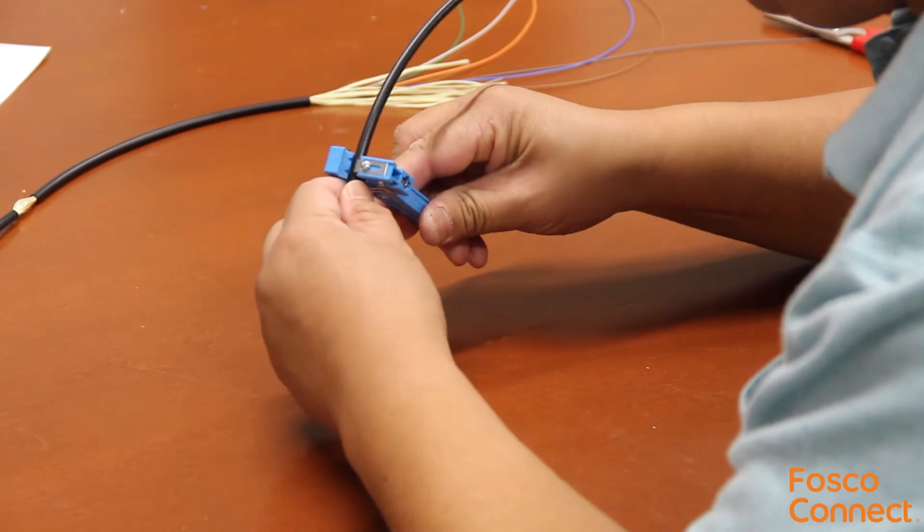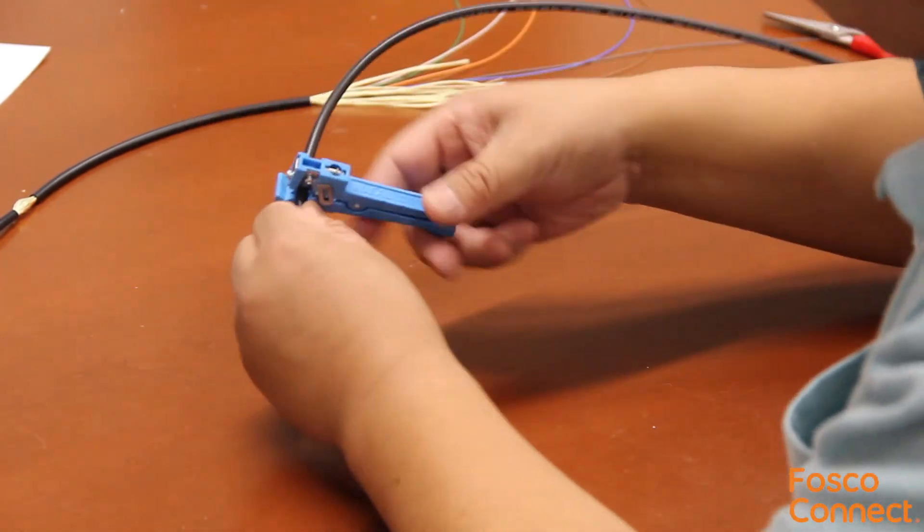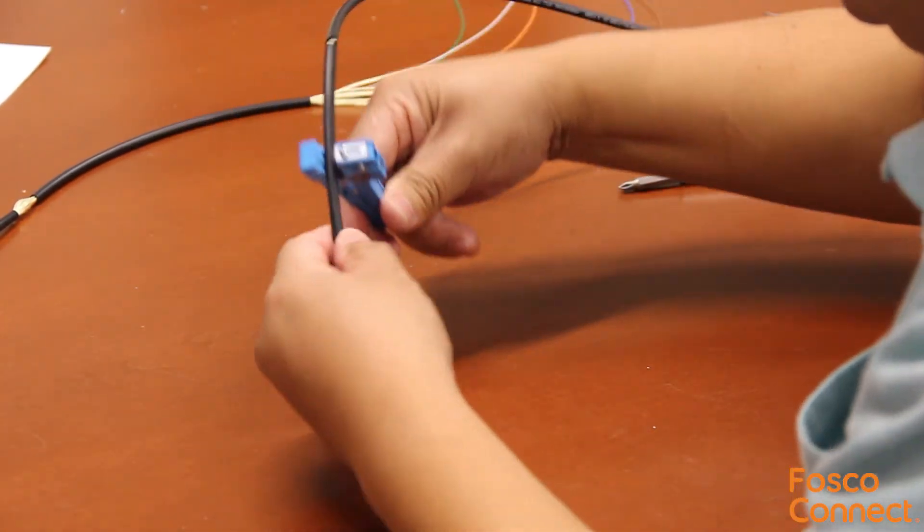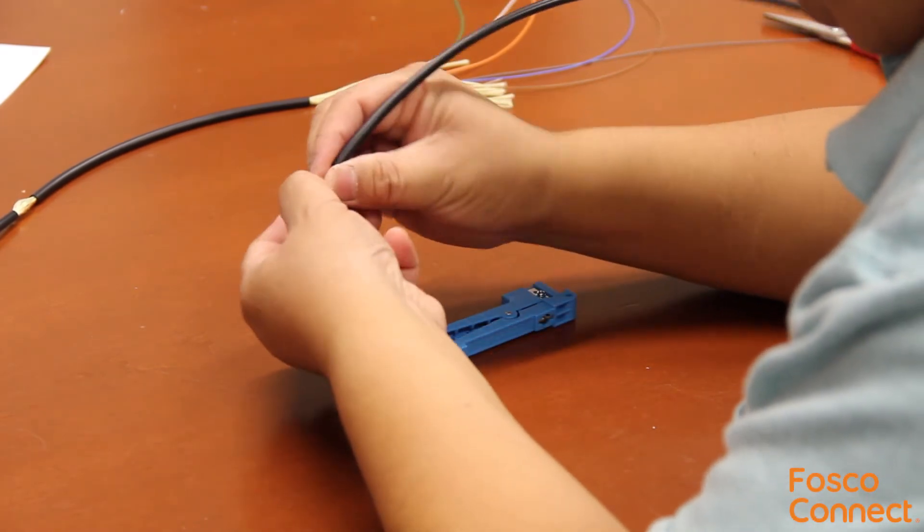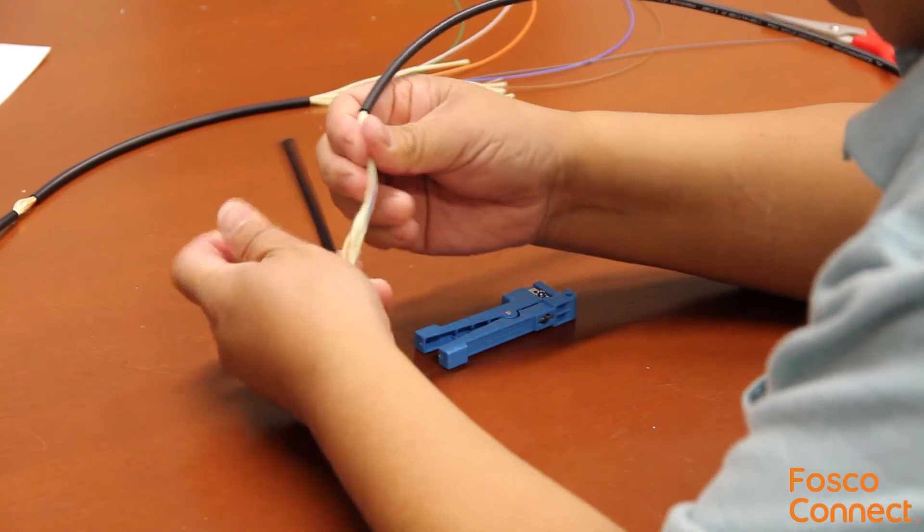Then put the buffer tube into the ring cut notch. Do the first ring cut and then the second ring cut. Now we can remove this section of the buffer tube and have a mid-axis window on this cable.